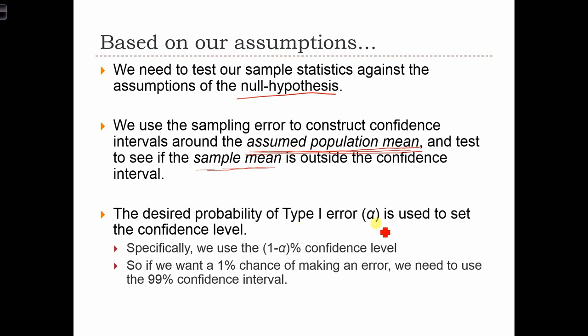The desired probability of type 1 error, alpha, the significance level, is used to set our confidence. For example, we are going to set up front what we want alpha to be. Typically, alpha is 1% or 5%. If we set alpha to 1% or 5%, the confidence level in our conclusion is going to be at the level of 1 minus alpha percent. So if alpha is 1%, we only want a 1% chance of making a type 1 error, then we are going to use a 99% confidence interval around this assumed population mean when we do our test.